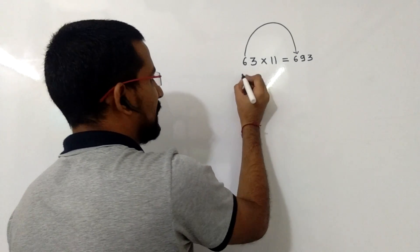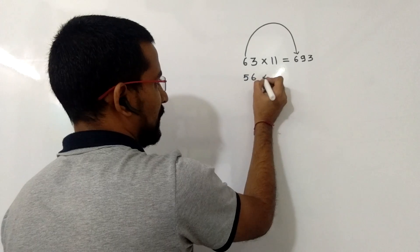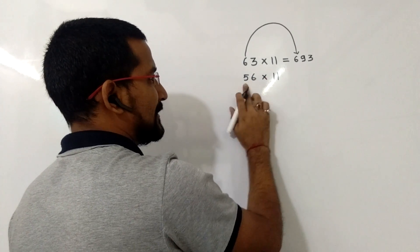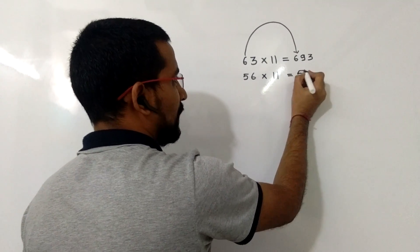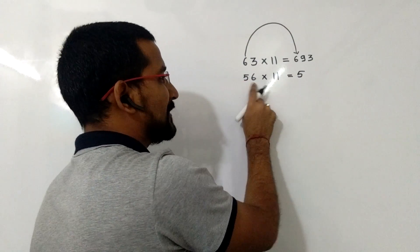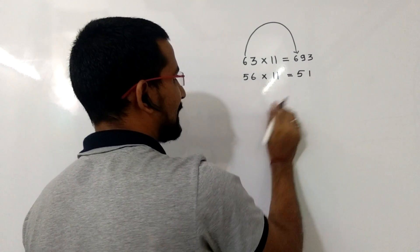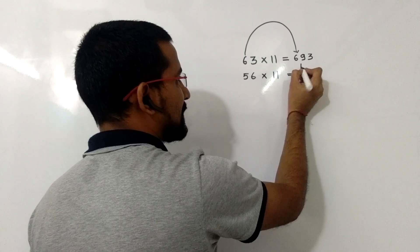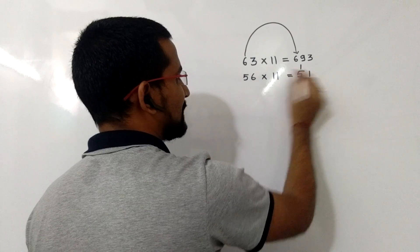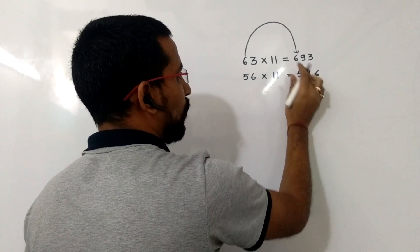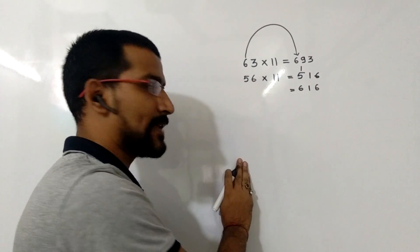Now we will take another example. If we want to multiply, for example, 56 into 11. So again we will write the 5 as it is. Now 5 plus 6 is a 2-digit number, that is 11. In that we will write the unit place, that is 1, as it is. And we will carry forward the tens place 1 to the first digit. And then the last digit we will write as it is, that is 6. So now 1 plus 5, that is 6. So the answer is 616.